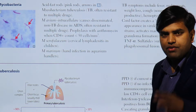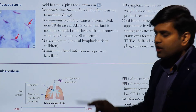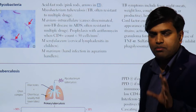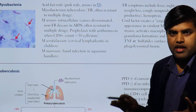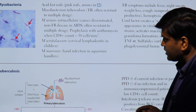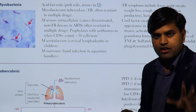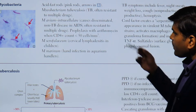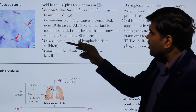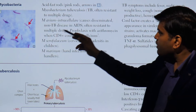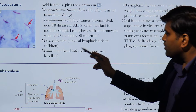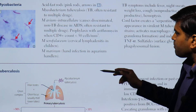After an AFB stain or ZN stain, if you see these pink rods, you understand the patient has tuberculosis in the sample. Now, mycobacterium species include mycobacterium tuberculosis, mycobacterium avium-intracellulare, mycobacterium scrofulaceum, and mycobacterium marinum.